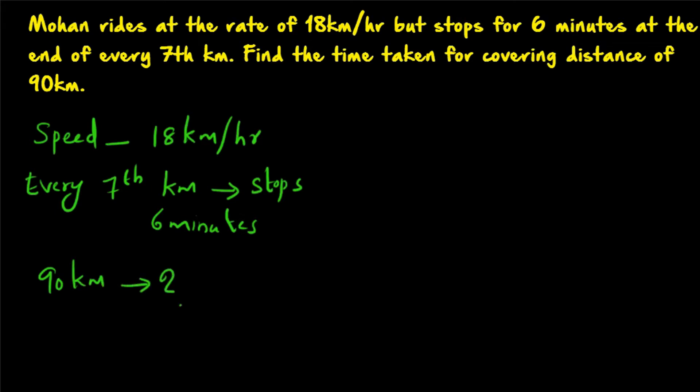His speed is given and there is additional information regarding time, but the exact time is not given. If the exact time was given, we could easily find it by using time equals distance divided by speed. But here, what is given is that every 7 km he will be stopping for 6 minutes. So how do we approach this question?